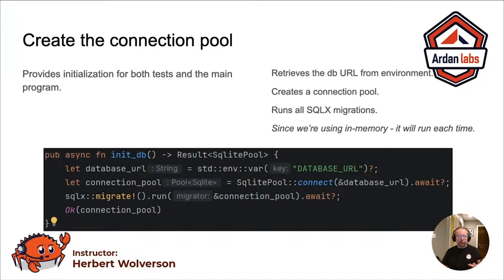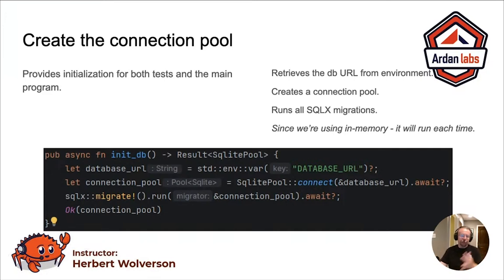Connecting and creating the pool is pretty easy: SQLite pool, connect, give it the database URL. And we're in async land, so you await it. What this does is it gives the actual database layer, SQLX, time to talk to SQLite, make sure the pool is actually up, return back — and once again, question mark — bail out if we can't create the database pool, because that's bad.